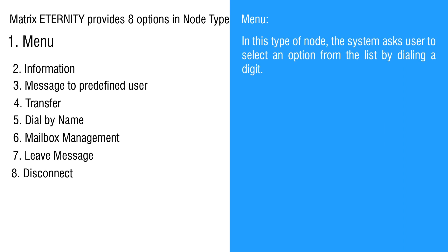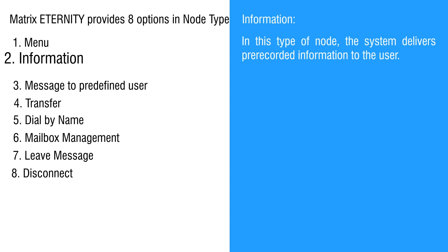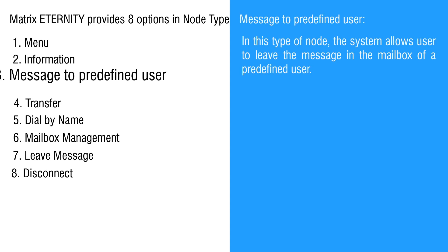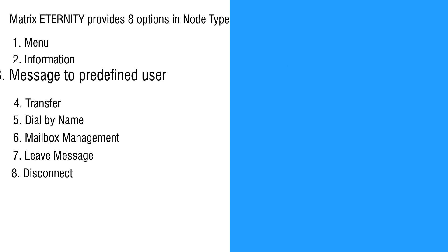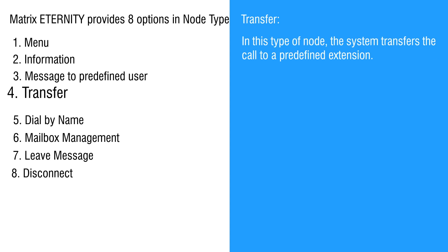Select Menu: in this node type, the system asks the user to select an option from the list by dialing a digit. Information: in this node type, the system delivers a pre-recorded message to the user. Message to predefined user: the system allows the user to leave a message in a mailbox of a predefined user. Transfer: the system transfers the call to a predefined extension.